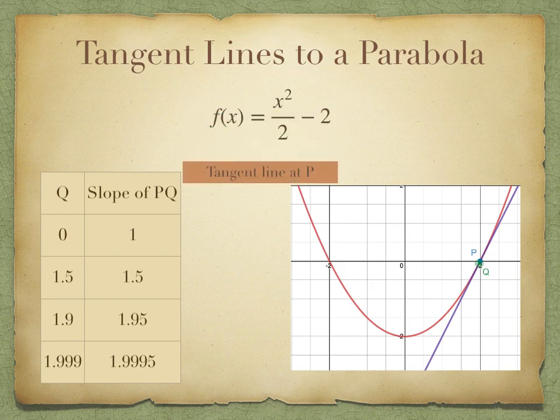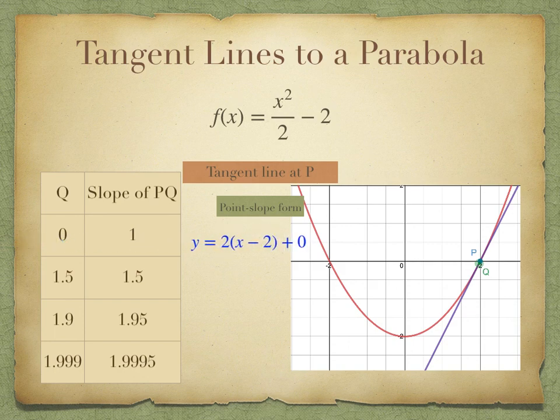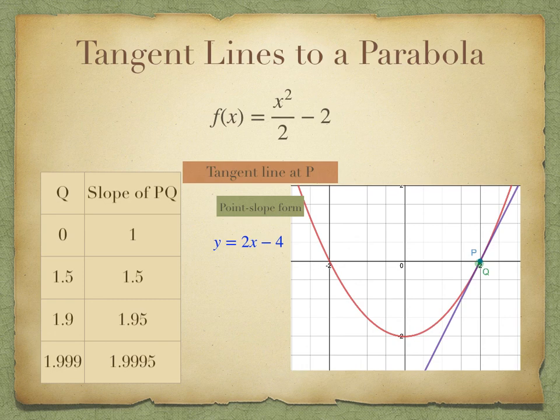The goal is to find the equation of the tangent line using point-slope form. With slope 2 and point p, the tangent line at p has the equation y equals 2 times (x minus 2) plus 0. Simplified, that is y equals 2x minus 4, which is the purple line.